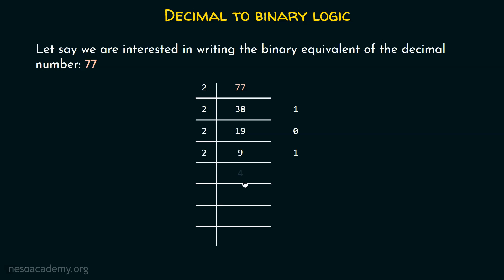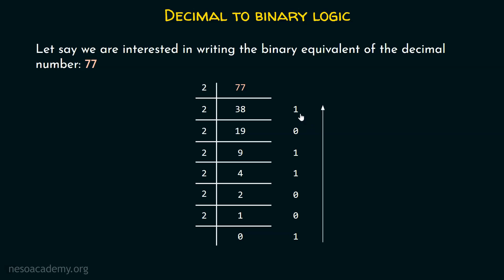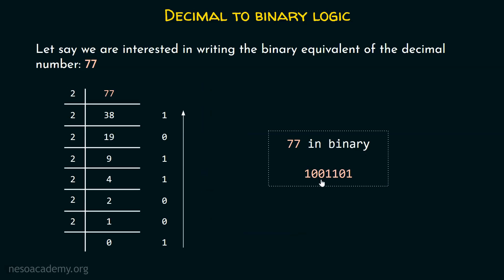We divide 9 by 2 to get quotient 4 and remainder 1. Then 4 divided by 2 gives quotient 2 and remainder 0. Then 2 divided by 2 gives quotient 1 and remainder 0. Finally, 1 divided by 2 gives quotient 0 and remainder 1. Since we have obtained 0 as the quotient, we stop. We then print all the remainders in reverse order — from bottom to top — giving us 1001101. So 77 in binary is 1001101, not 1011001.